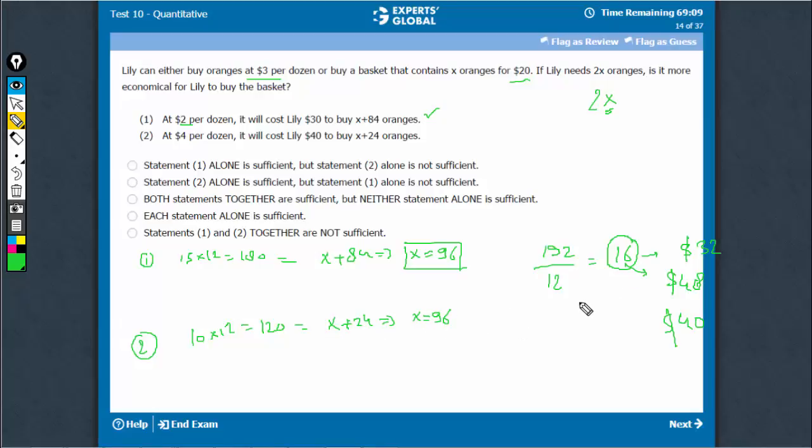We just solved it that at 96, the basket is economical. So, this would also be sufficient. D is the right answer.